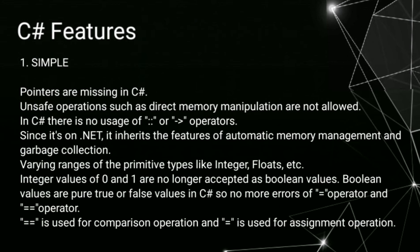Varying ranges of the primitive types like integer, floats, etc. Integer values of 0 and 1 are no longer accepted as boolean values. Boolean values are pure true or false values in C sharp, so no more errors of equals operator and equals equals operator. Equals equals is used for comparison operation and equals is used for assignment operation.